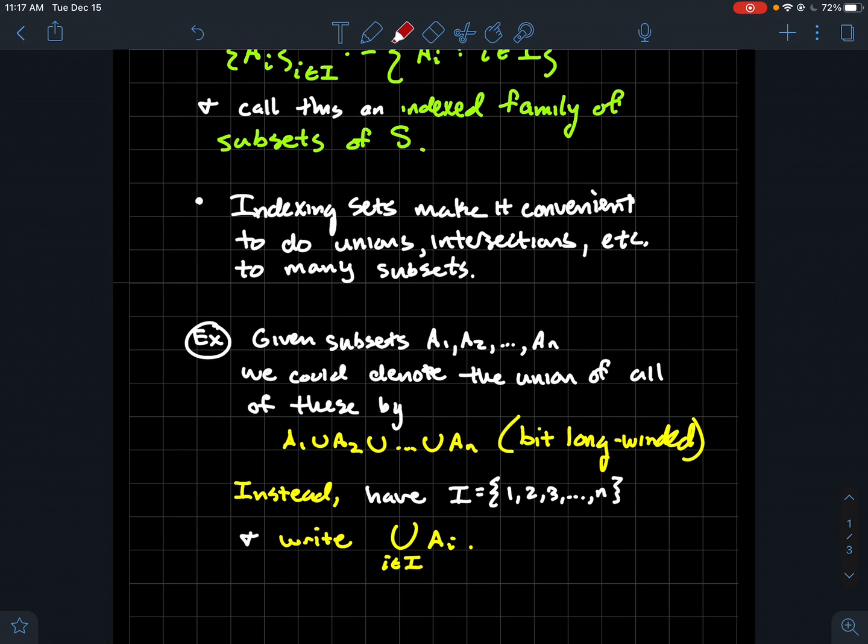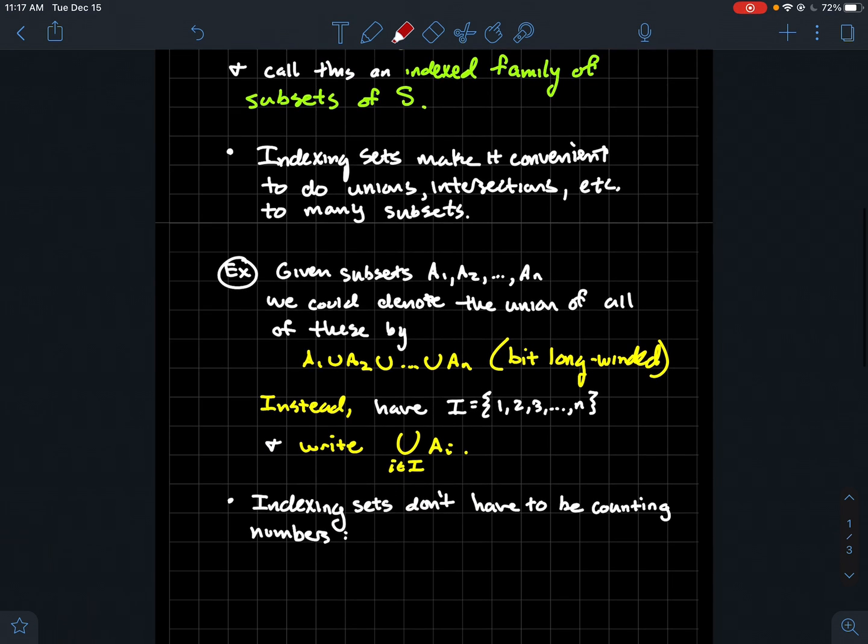You could do the same thing with intersections as well. Just like sigma notation helped us clean up not writing a bunch of plus signs everywhere, index sets make it a little easier to do operations to perhaps lots of sets at one time.